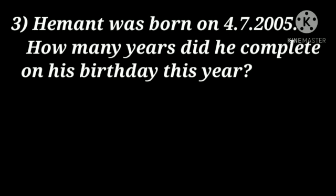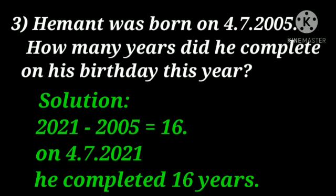Third problem: Hemant was born on 4th July 2005. How many years did he complete on his birthday this year? This year means 2021, so we subtract his birth year: 2021 minus 2005 equals 16. Therefore, on 4th July 2021 he completed 16 years.